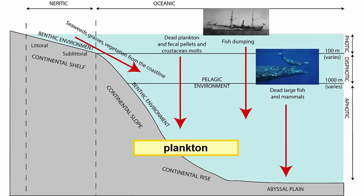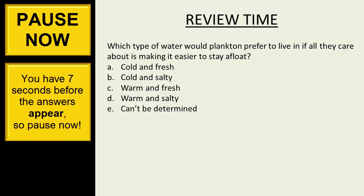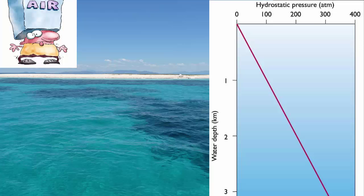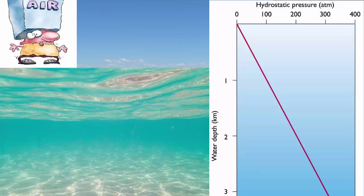What happens to these organisms as they descend into the depths of the oceans? It gets colder and also becomes higher in pressure. Organisms that live in the deep ocean have to deal with the high pressures from the weight of overlying water. On land, pressure comes from the weight of the air above us. In the oceans, it comes from the weight of the air and the water, and the weight of the water has a much greater impact.